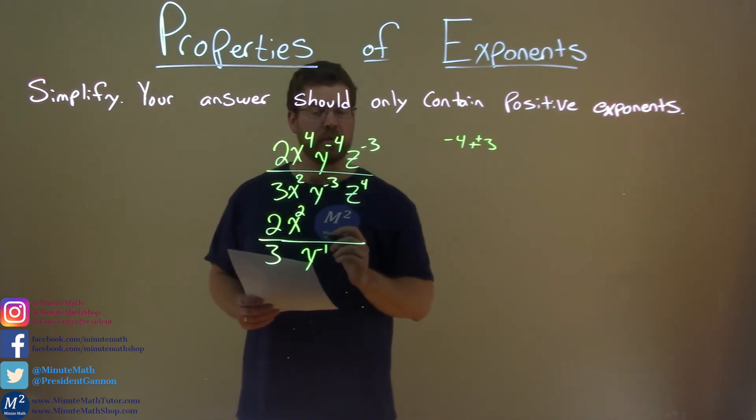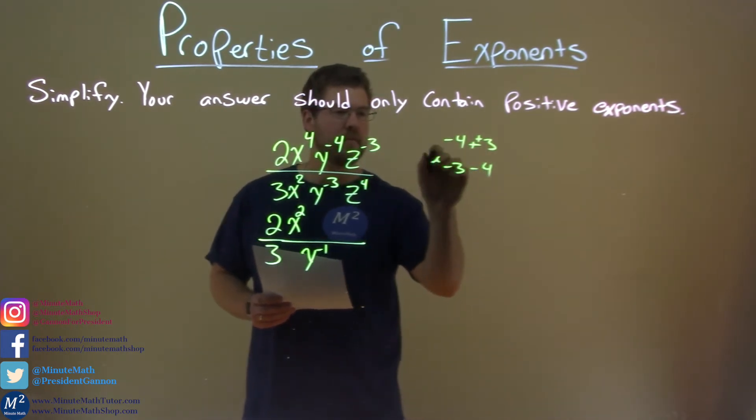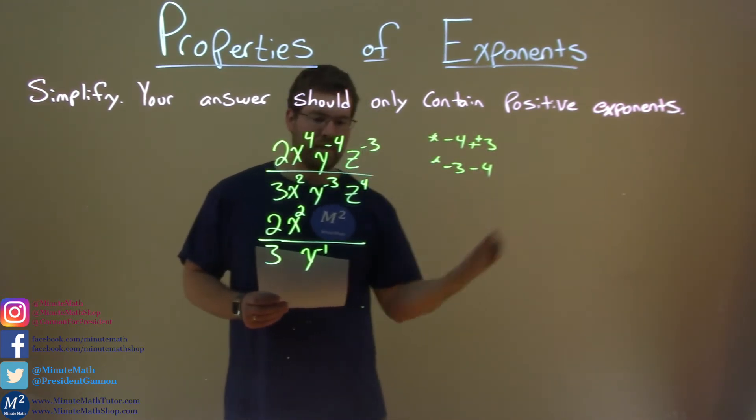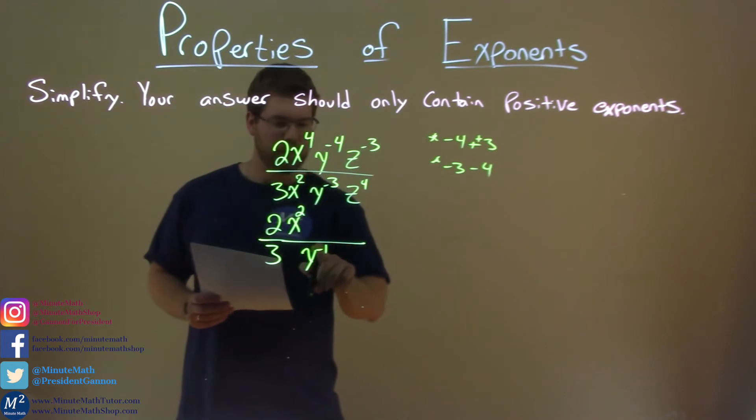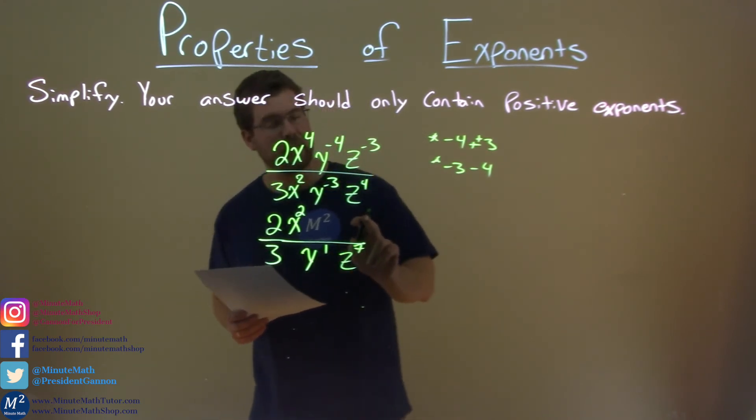Now let's deal with the z's. z to the negative 3rd divided by z to the 4th power, so we have negative 3rd minus 4, that's for the z's. Negative 3 minus 4 is negative 7, that means we have it in the denominator. And this y is a positive, because it's in the denominator. So we have z to the positive 7th in the denominator here, it would be negative 7th in the numerator.